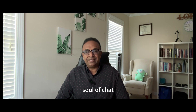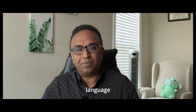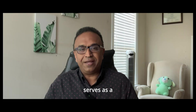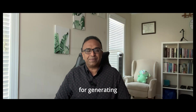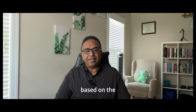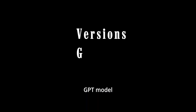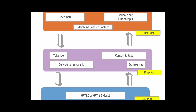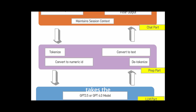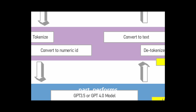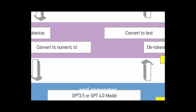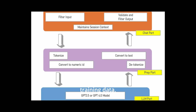The heart and soul of ChatGPT lies within the language model. The model serves as the brain behind ChatGPT, responsible for generating responses based on the input it receives. Currently, there are two prominent versions of the GPT model: version 3.5 and version 4.0. The model takes the input from the preparation part, performs computations, and generates responses based on probabilities and training data.